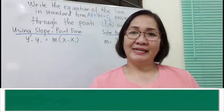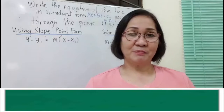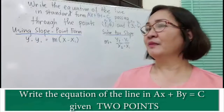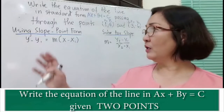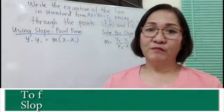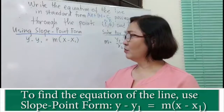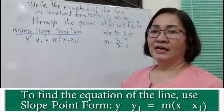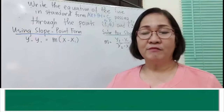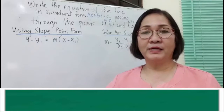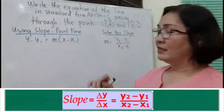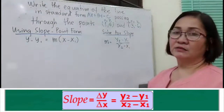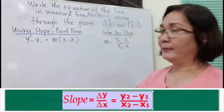We're going to write the equation of the line in standard form ax plus by is equal to c, wherein two points are given. To find the equation of the line, we're going to use the slope-point form: y minus y sub 1 is equal to m times x minus x sub 1. To recall, the slope given two points is y sub 2 minus y sub 1 over x sub 2 minus x sub 1.